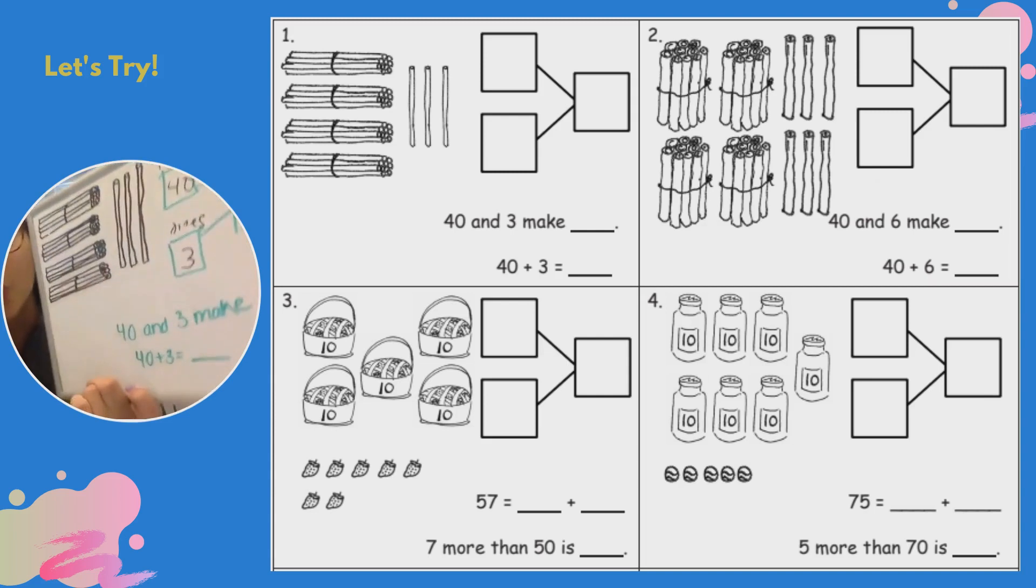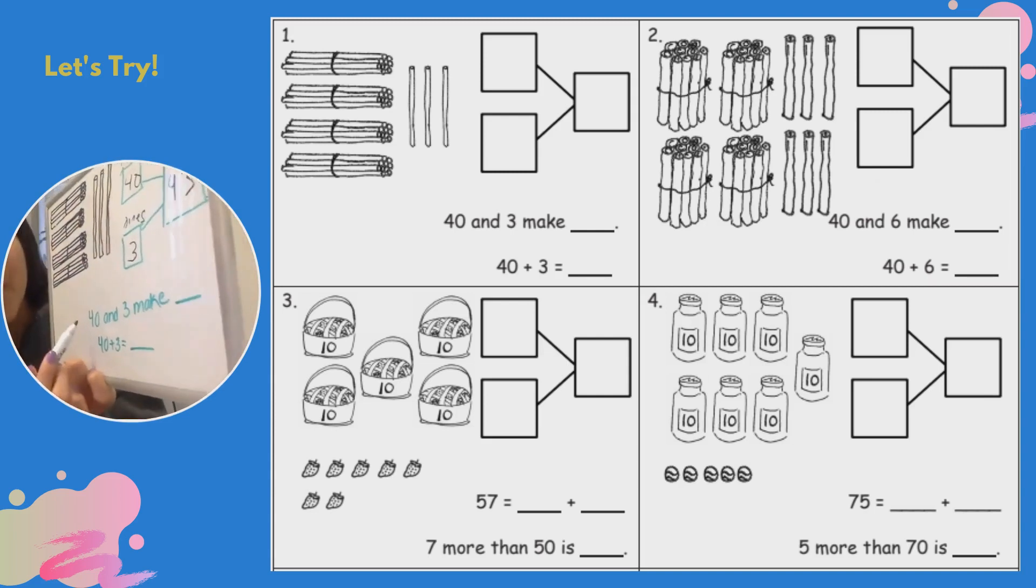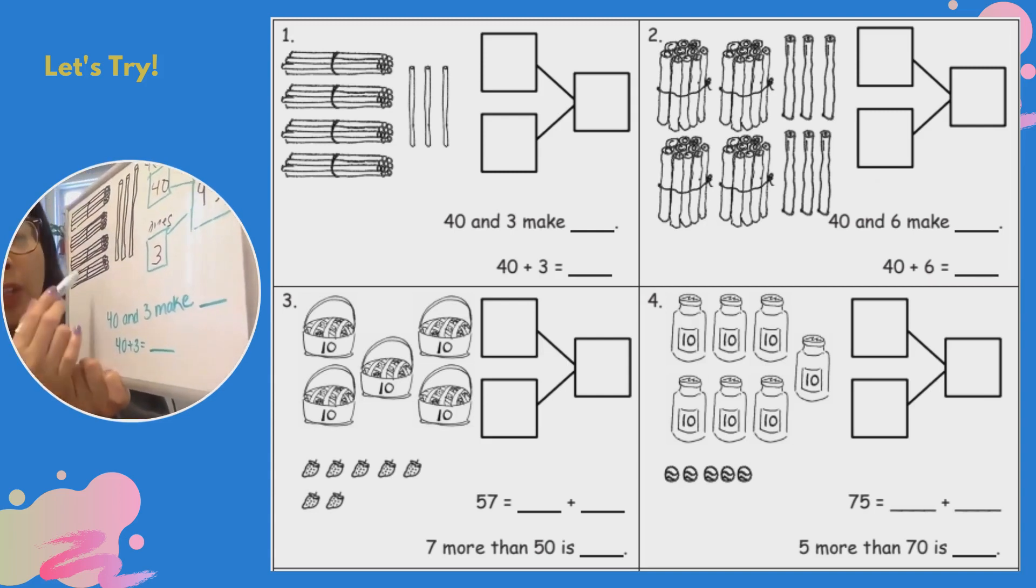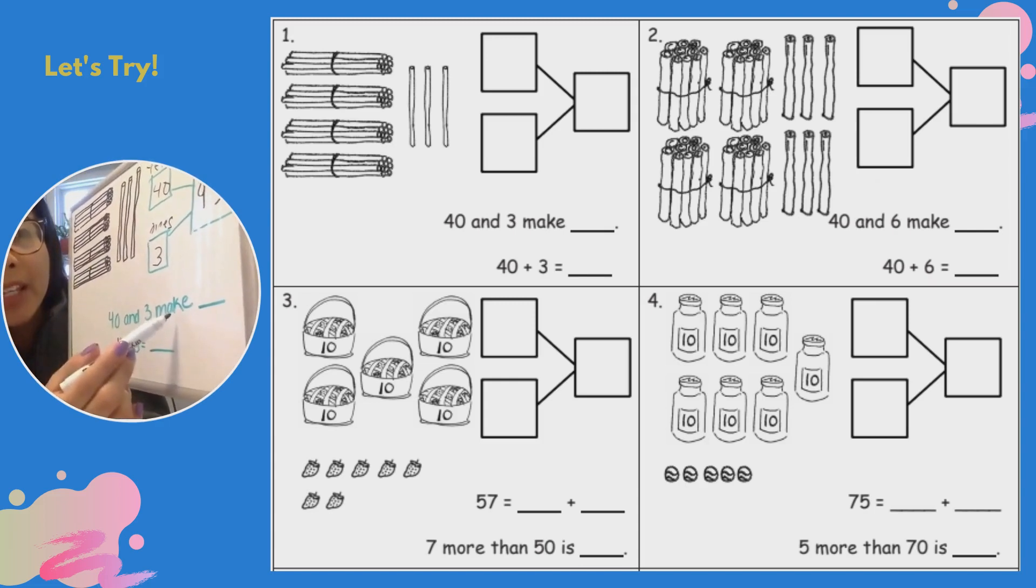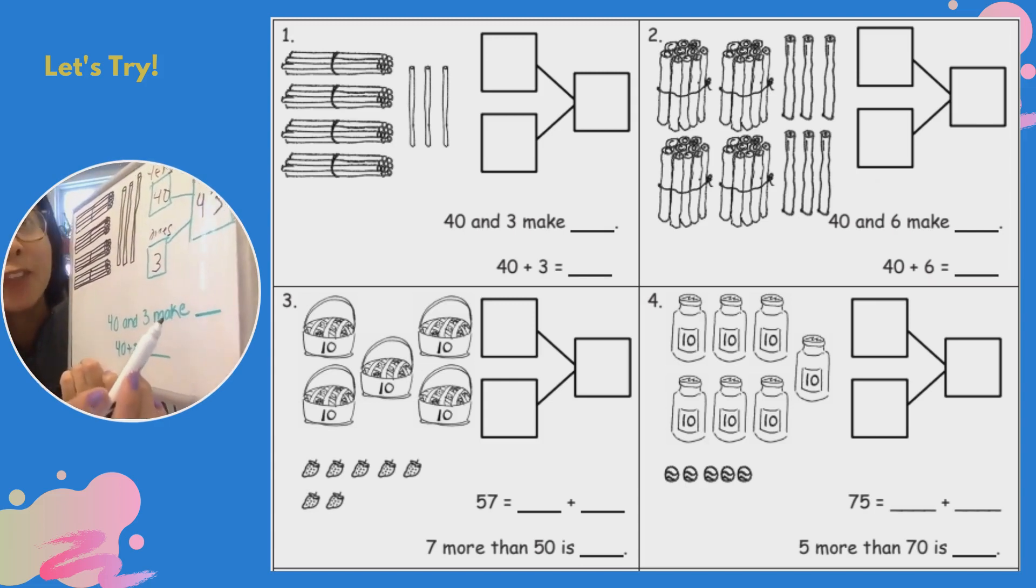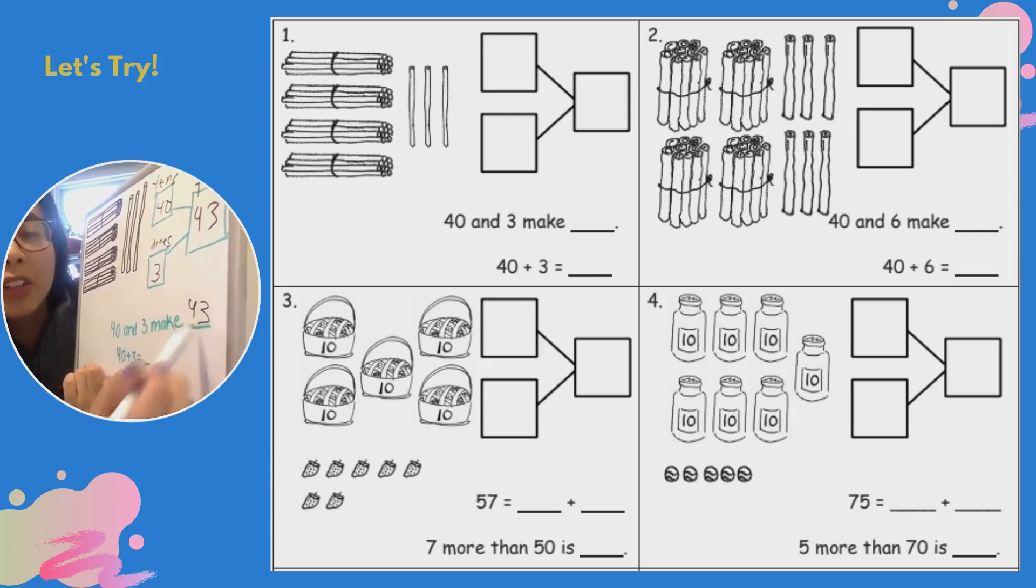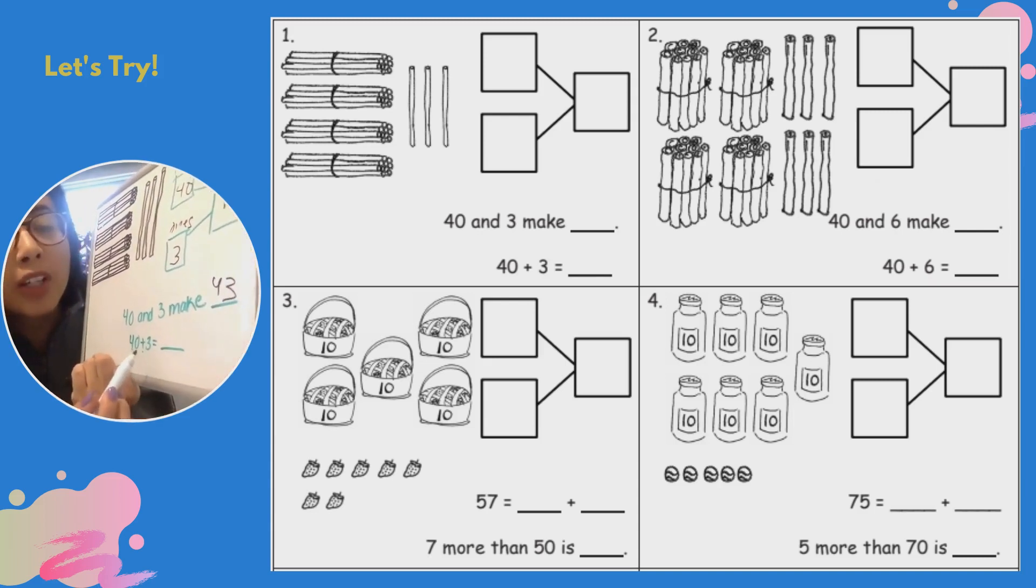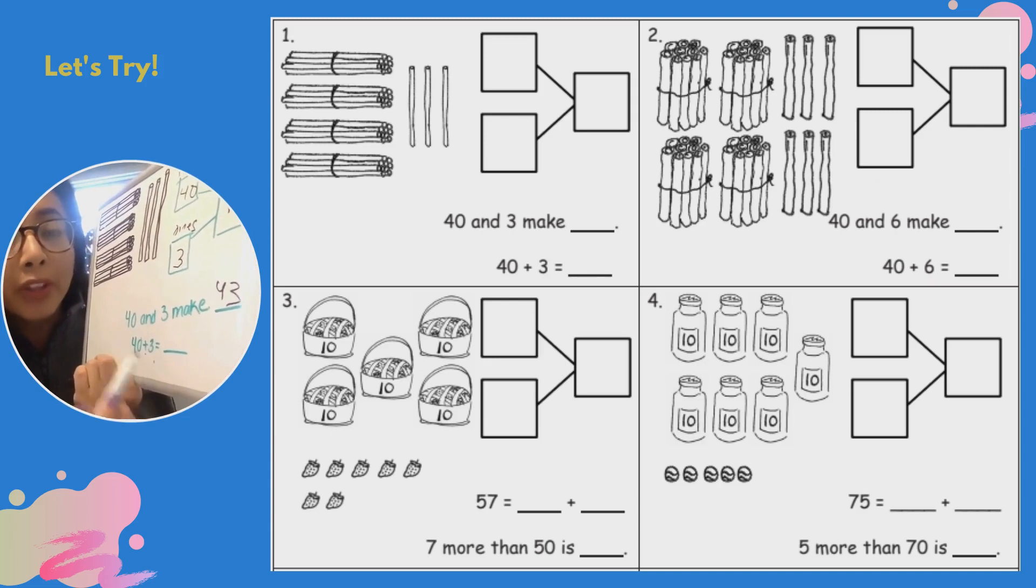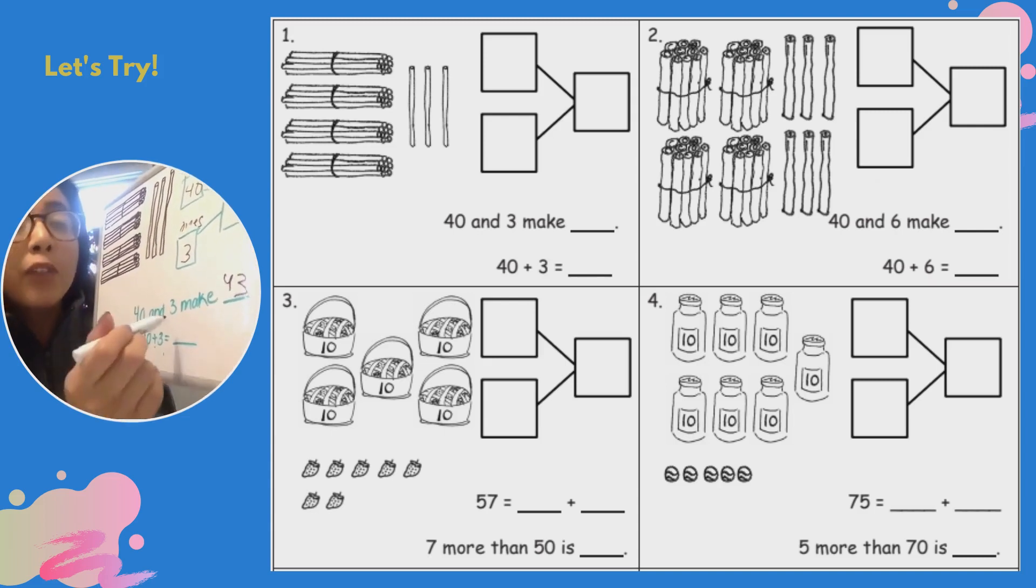So now I can fill out my sentences. 40 and 3 make what number? Did they make when I added 40 and 3 together? They made 43. Good. Now 40 plus 3, or 40 more than 3 is 43.